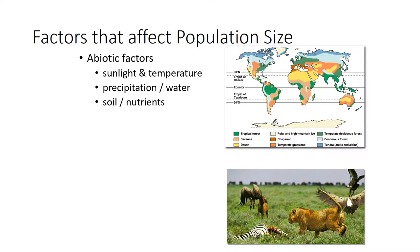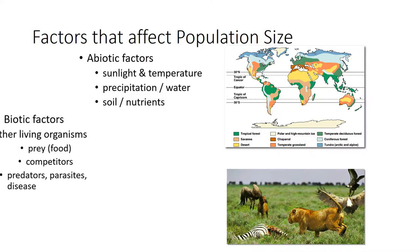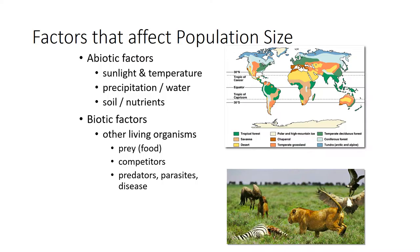There are also biotic factors that affect populations — other living organisms. Abiotic is non-living; biotic is living. Those living organisms could be the type of organisms that one population eats — the prey items — or other competitors competing for a similar resource. In this picture, you see a lion that's just killed a zebra, but there's also a hyena in the background and vultures also trying to eat the zebra. Other things that can affect population distributions are parasites and disease.